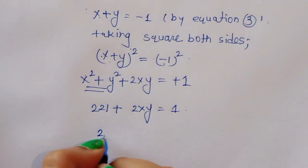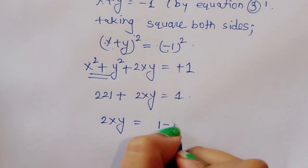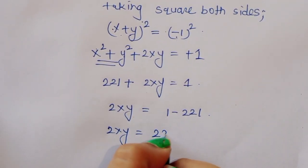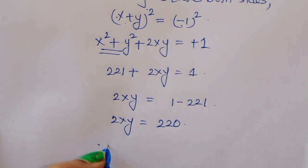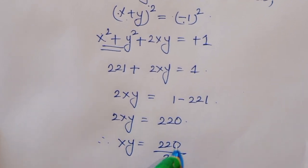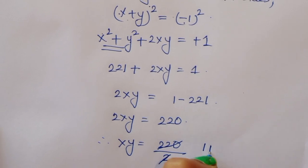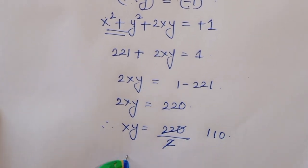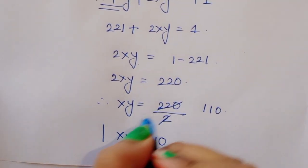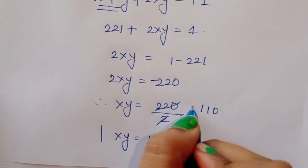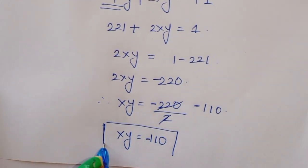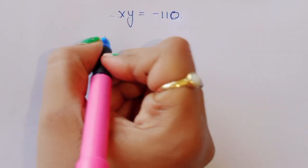So 2xy equals 1 minus 221, which gives 2xy equals minus 220. Therefore xy equals minus 220 divided by 2, so xy equals minus 110.